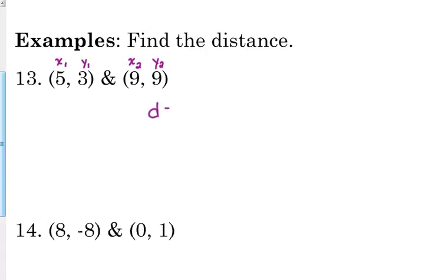So distance equals the square root of x1 minus x2. Now, technically, the order of that really doesn't matter. It doesn't matter whether you do 5 minus 9 or 9 minus 5. When you square it, you're going to get the same thing. Because 5 minus 9 is negative 4, 9 minus 5 is positive 4. Negative 4 and positive 4 squared is the same thing.